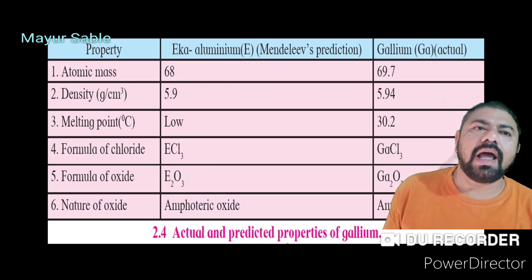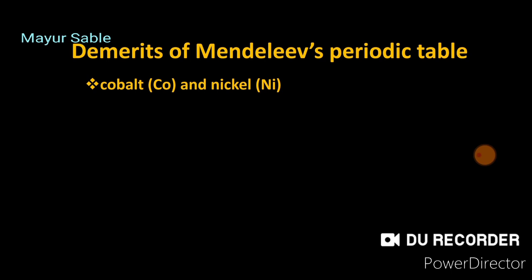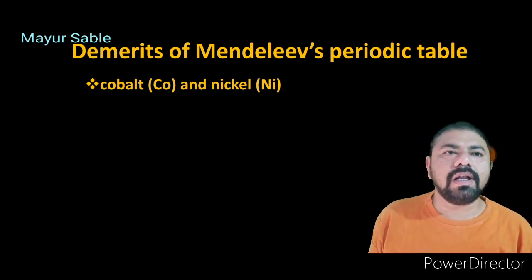The third merit of Mendeleev's periodic table concerns noble gases. The noble gases were not discovered by the time Mendeleev created his table, so no place was given to them originally. When noble gases such as Helium, Neon, Argon, Krypton, Xenon, and Radon were discovered — Neon, Argon, and Helium by the end of the 19th century — Mendeleev created a zero group to accommodate them without disturbing the original periodic table.